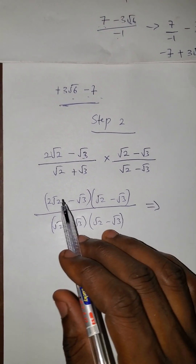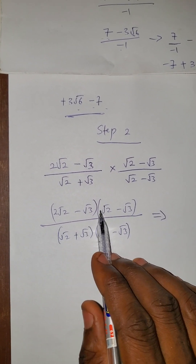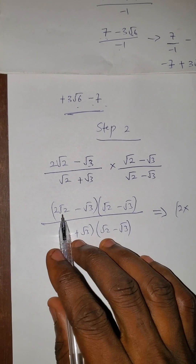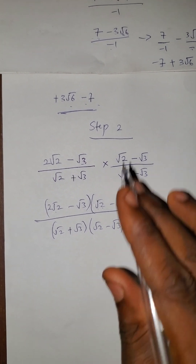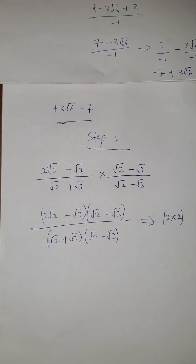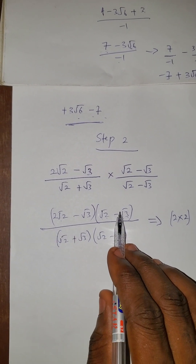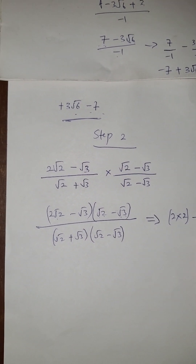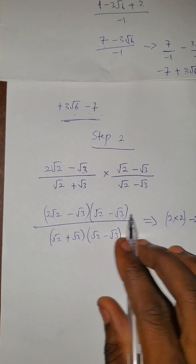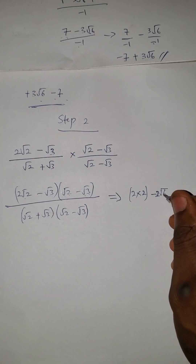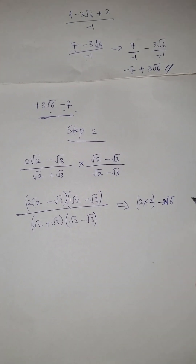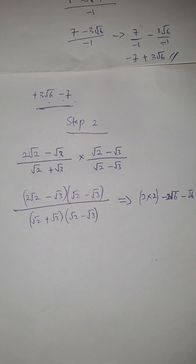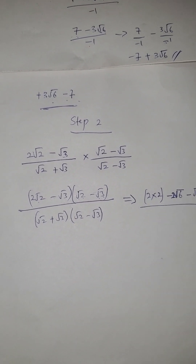Using the shortcut: 2√2 times √2 — the coefficient is 1, so 2 times 1 is 2, and √2 times √2 is 2. Then 2√2 times minus √3 gives minus 2√6. Then minus √3 times √2 gives minus √6. And minus √3 times minus √3 — minus times minus is plus — and √3 times √3 equals 3 by the law of roots.